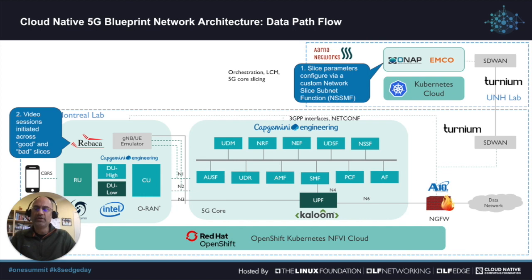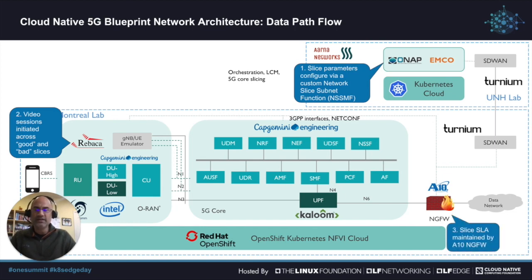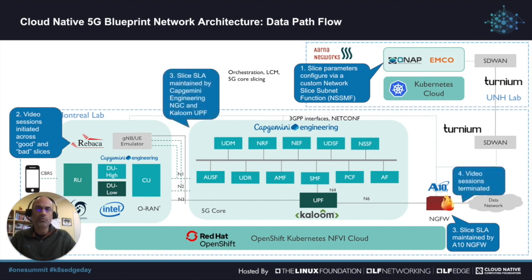We created two slices: one was the good slice at five megabits per second and a bad slice at 2.5 megabits per second, and we were able to initiate two video sessions. One was a five megabits per second session going through the good slice, the other was a 2.5 megabits per second going through the bad slice. The SLAs were honored by the 5G core and the firewall, and we were able to look at the video on the other side of the firewall. So with that let's look at the demo.